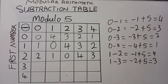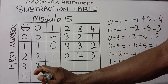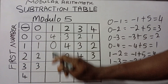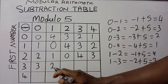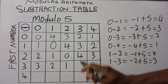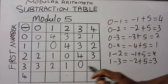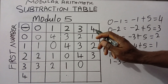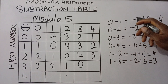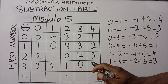Remember, the idea here is that you must not have a negative value in any of these cells. So for this part, 3 minus 0 gives us 3. Then 3 minus 1 gives us 2. 3 minus 2 gives us 1. 3 minus 3 gives us 0. Then 3 minus 4 gives us minus 1; add the modulus to it, and that gives us 4.